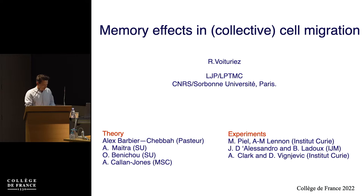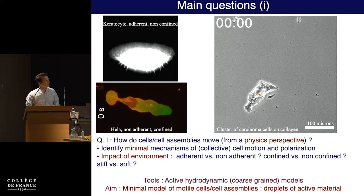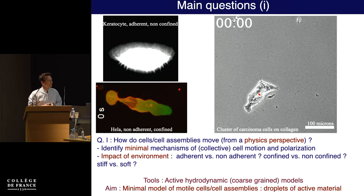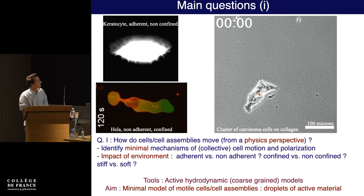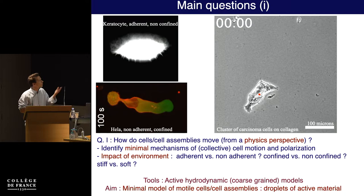It's a bit intimidating to introduce cell migration in front of this audience, so I'll make it brief. As a physicist interested in cell migration, I typically have two kinds of questions. The first is: how do cells move from a physics perspective? We try to build minimal physical models of what a cell or cell cluster would be, and understand the minimal mechanisms that can lead to motion. We try to depict these phenotypes as a droplet of something, and ask what minimal properties you need to give that something to reproduce the observed phenomenology.